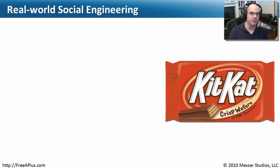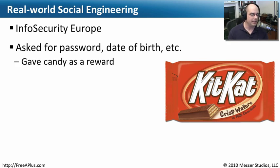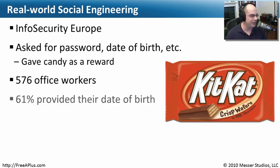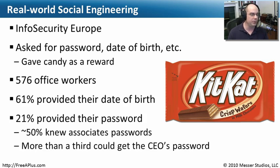Sometimes the easiest way to get information is just to ask. A study done at InfoSecurity Europe — conducted every year — has researchers go to a train station and ask people, 'What's your password? If you give it to me, I'll give you some chocolate.' People responded, 'Here's my password, here's my date of birth, here's my boss's password too.' In the last study, 576 people were asked: 61% gladly gave their date of birth for chocolate, 21% handed over their password and offered their colleague's password, and some even offered the CEO's password for another piece of chocolate.